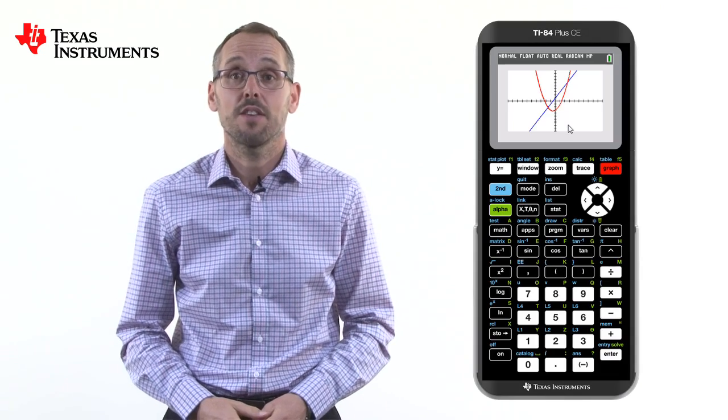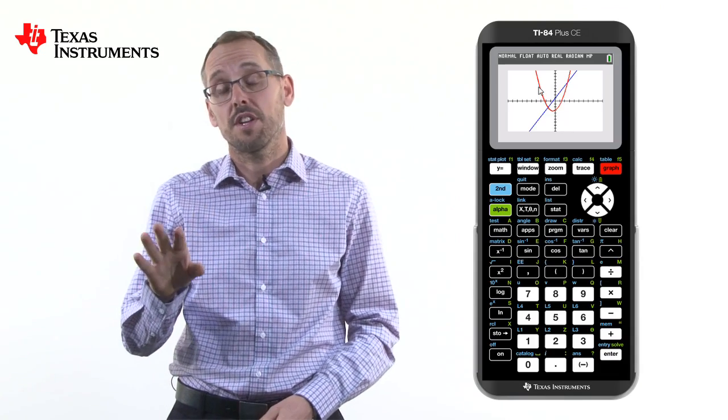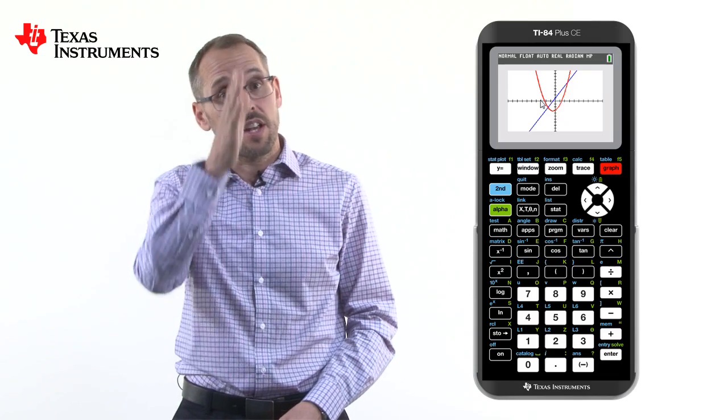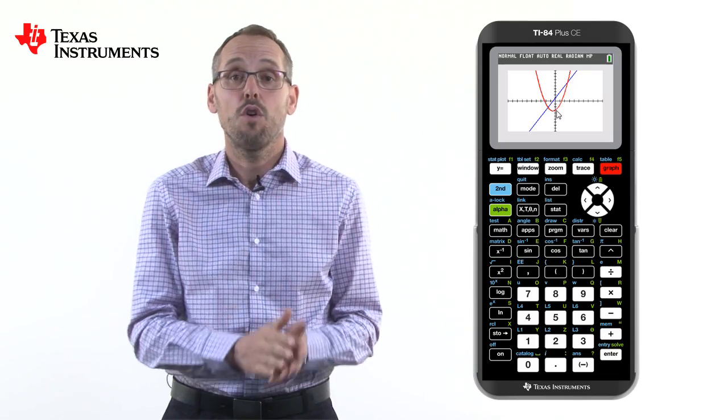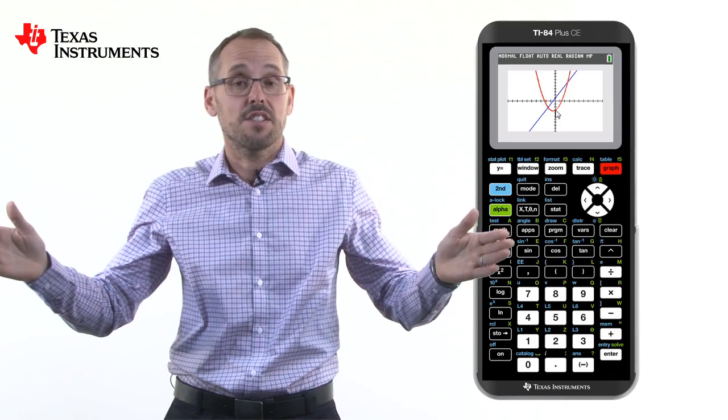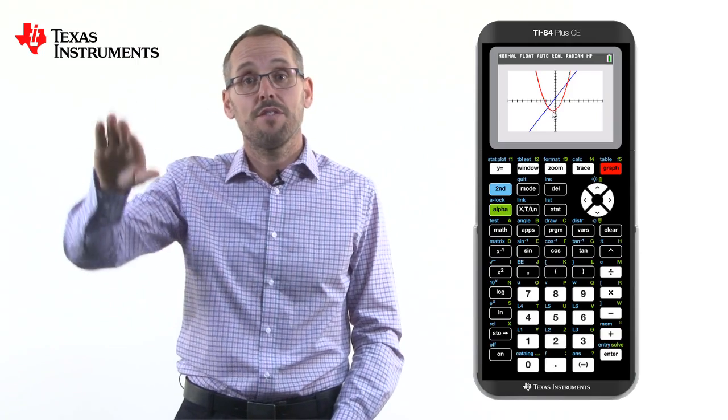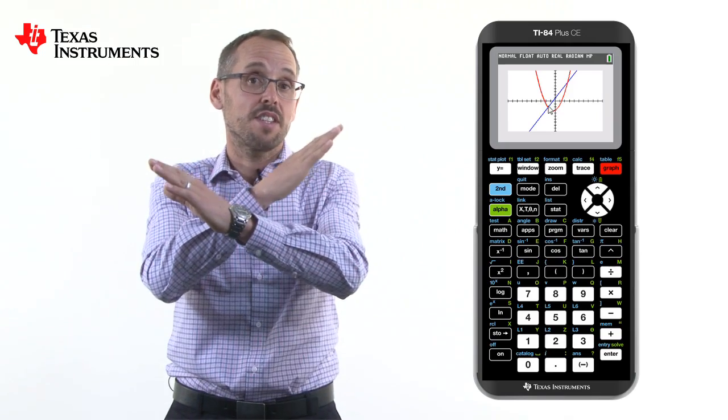Well, maybe we want to find some values. Maybe we want to find the coordinates at this particular x value. Maybe we want to know where it cuts the y axis or where the graph cuts the x axis called the zeros. Or maybe we want to find the minimum of the graph or where two graphs intersect.